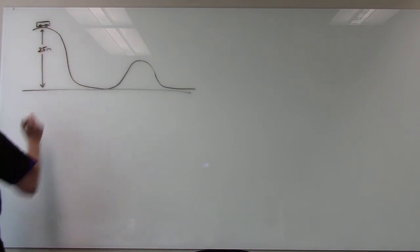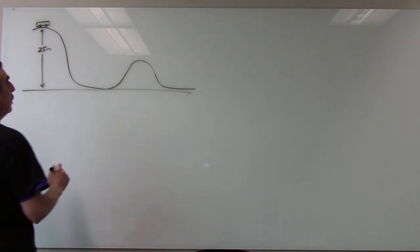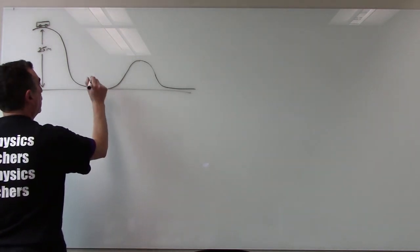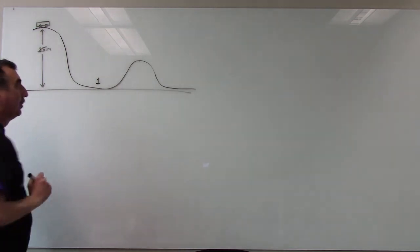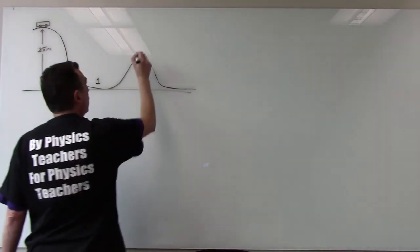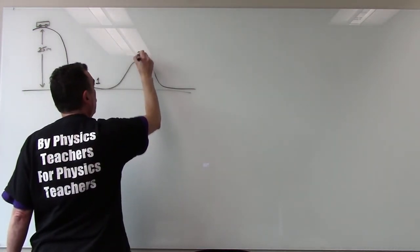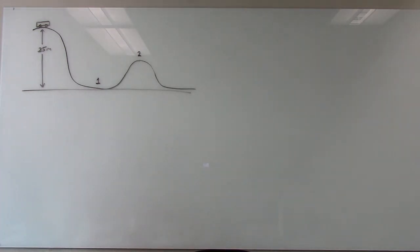And let's give ourselves two sig figs. We're going to find out what its velocity is right here at the bottom, at position 1. And let's find the velocity at position 2, also.